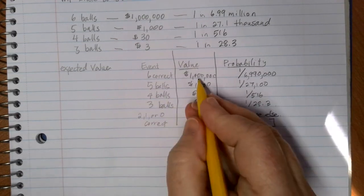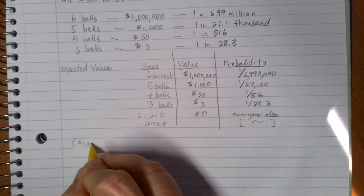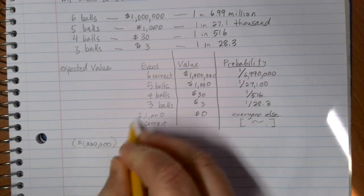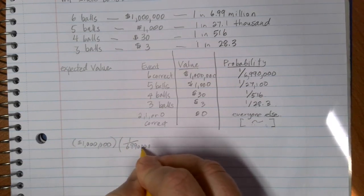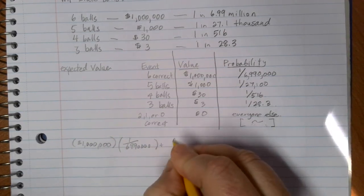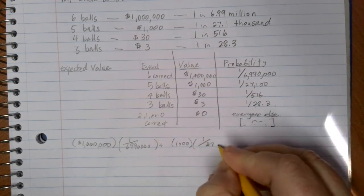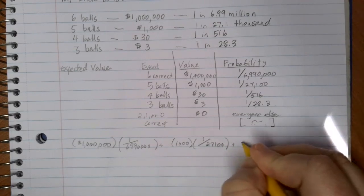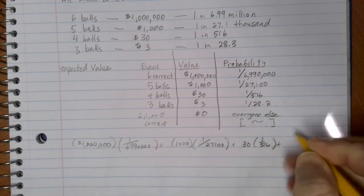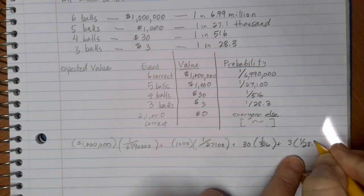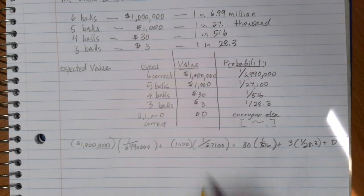To find the expected value, we multiply the value by the probability of that occurring. So here we're going to have $1,000,000 times 1 over 6,990,000 plus $1,000 times 1 over 27,100 plus $30 times 1 over 516 plus $3 times 1 over 28.3 plus 0 times everybody else in terms of the probability.